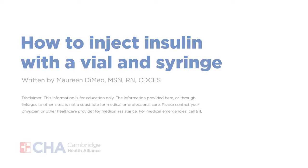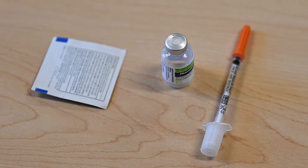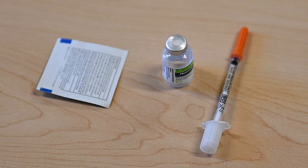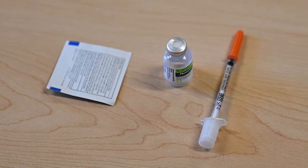Unopened insulin can be stored in the refrigerator and will expire by the date on the box. Write the date on the bottle on the day you start using it. Opened bottles of insulin can be kept at room temperature.